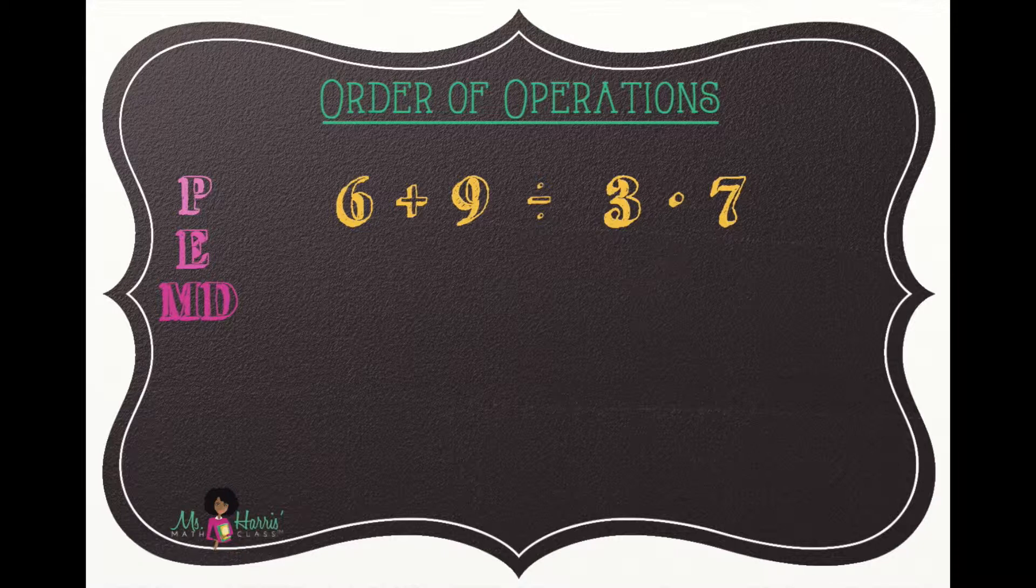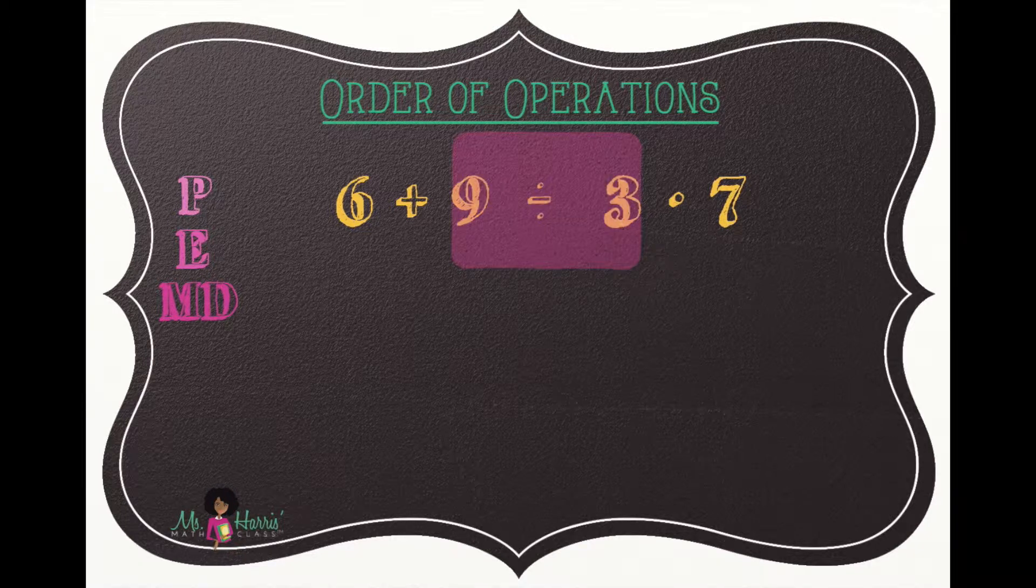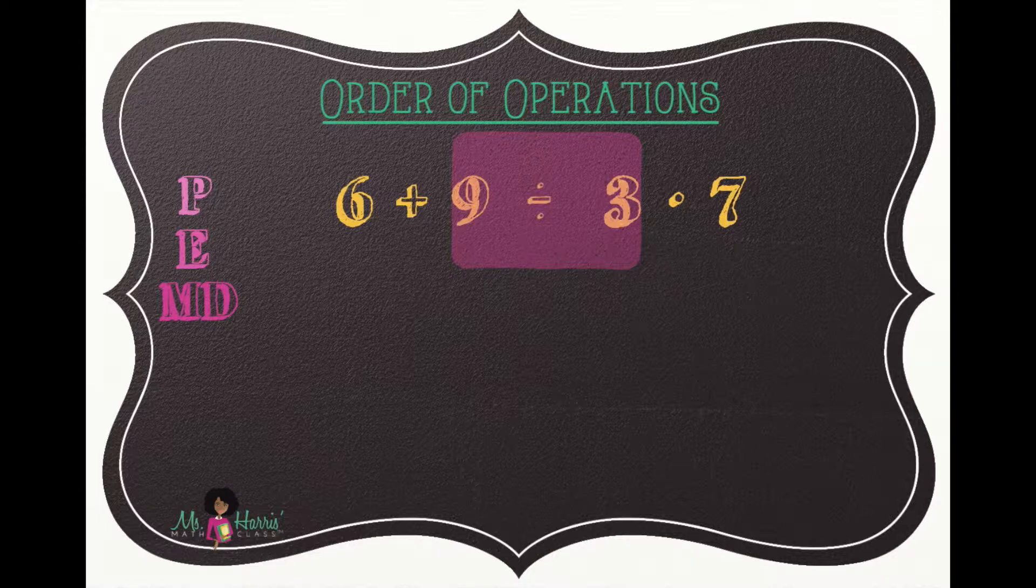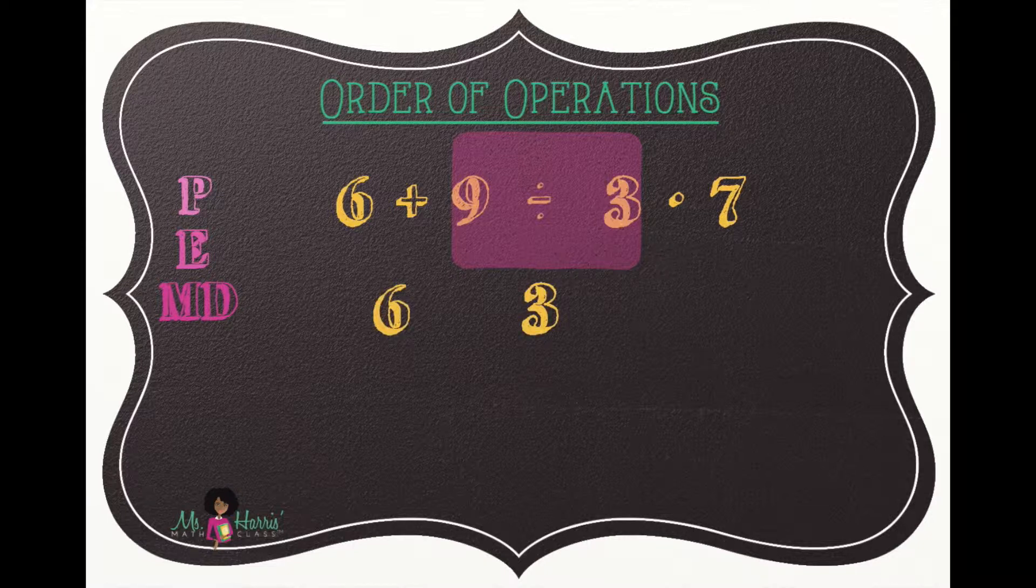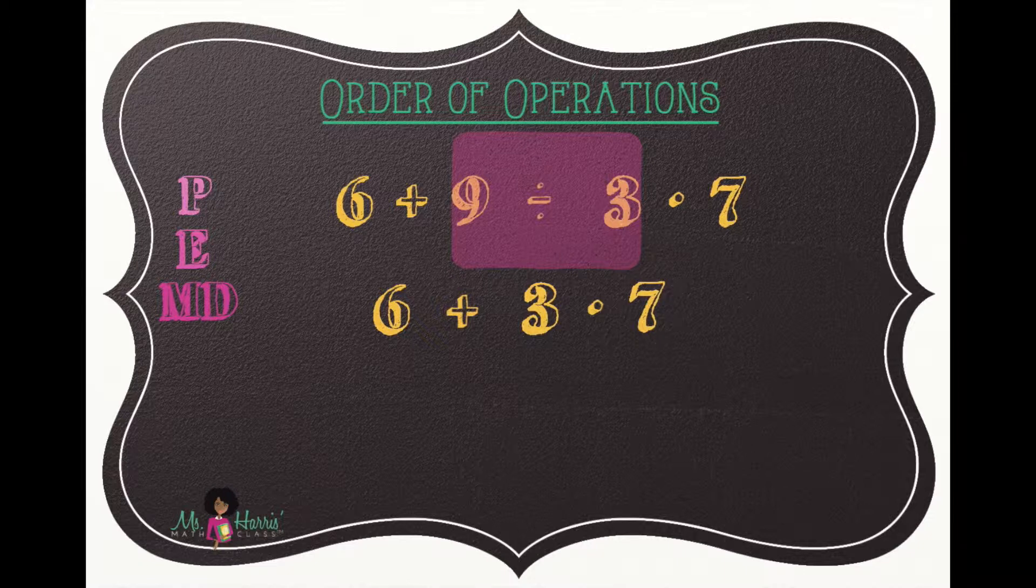The first operation we get to from left to right is division. So let's highlight nine divided by three. Nine divided by three is three, so we bring that down and then bring down the remaining numbers. Six plus three times seven.